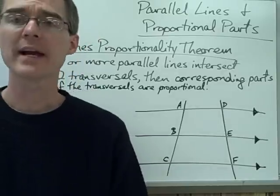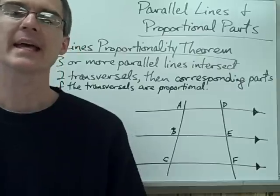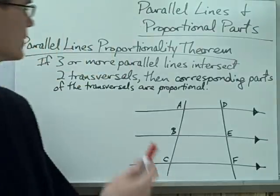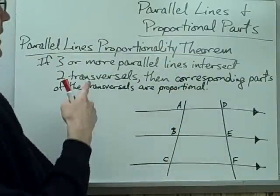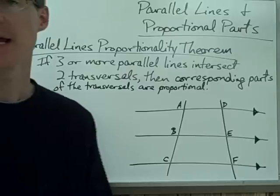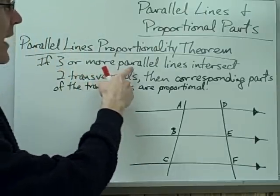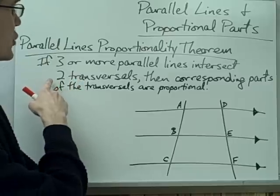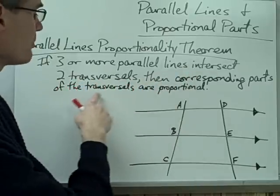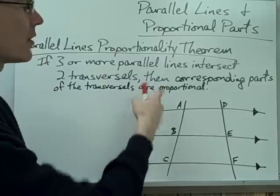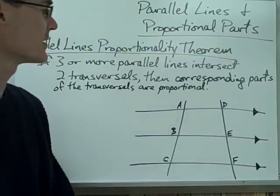This video is on parallel lines and proportional parts, and it's essentially based on this one theorem called the parallel lines proportionality theorem. The parallel lines proportionality theorem says: if three or more parallel lines intersect two transversals, then corresponding parts of the transversals are proportional. Let's take a look at what this theorem is saying.